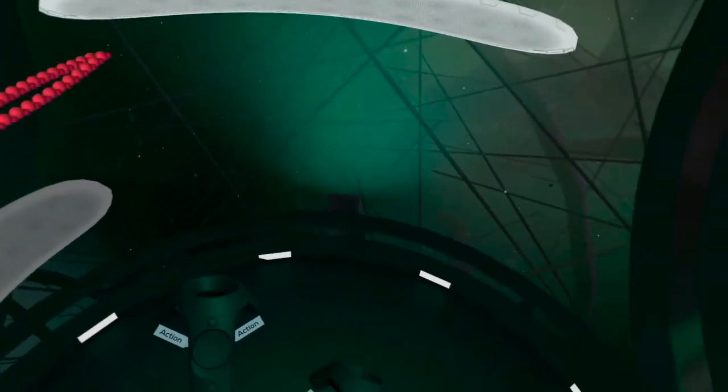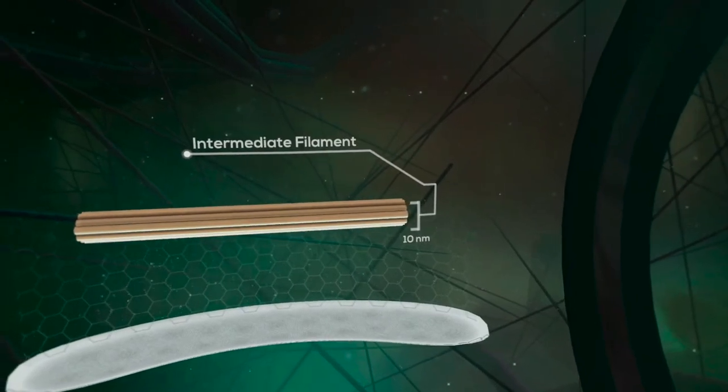Intermediate filaments are made of the protein actin, and have a diameter of 10 nanometers.